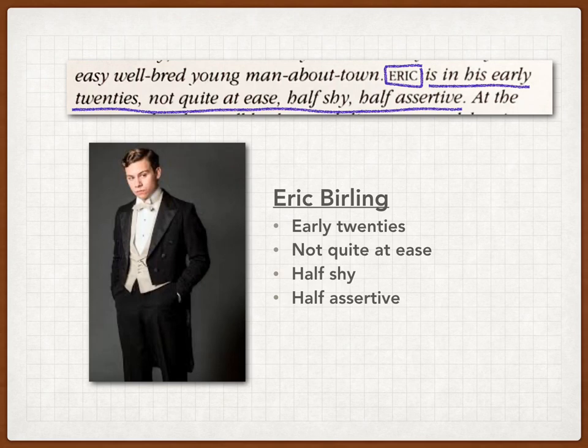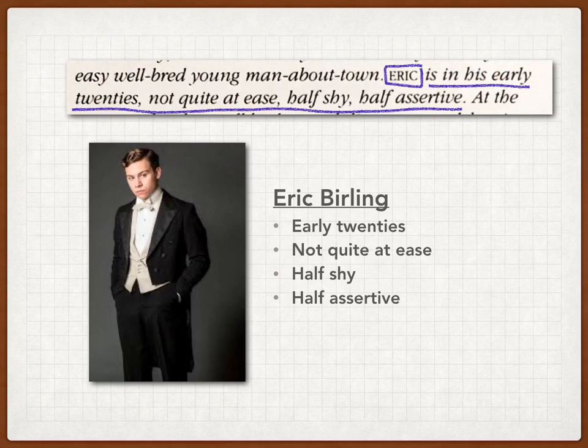We also need to look at the description of Eric Birling, the son of Mr. and Mrs. Birling. He is in his early 20s, younger than Sheila. But he's not quite at ease — he is half shy and half assertive. So sometimes he may be very quiet without giving any opinion, but once he gives his comment, he is very certain about his own opinion. That is what assertive means.